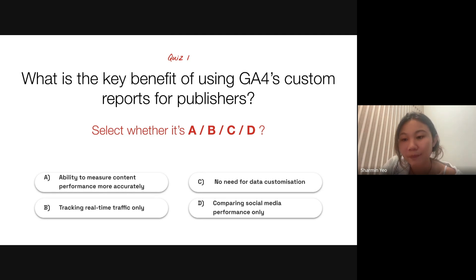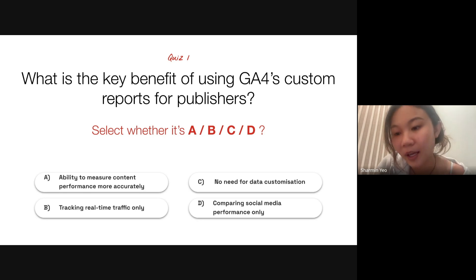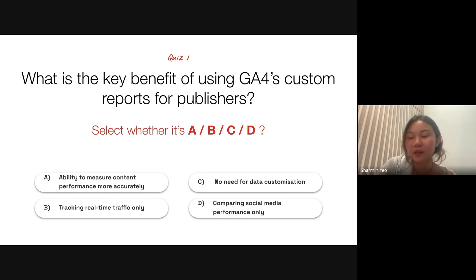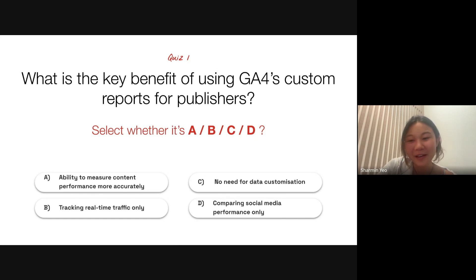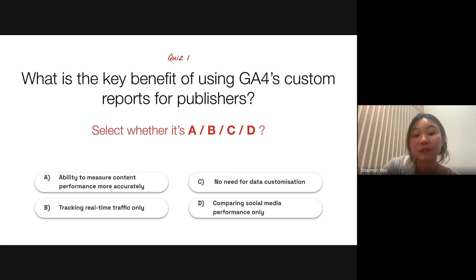I see that there are some votes — most people are selecting option A. Let's give it a few more seconds. All right, everybody is selecting option A, so I'll go ahead to end the poll. The answer is A — the ability to measure content performance more accurately — that is the key benefit of using GA4 custom reports.